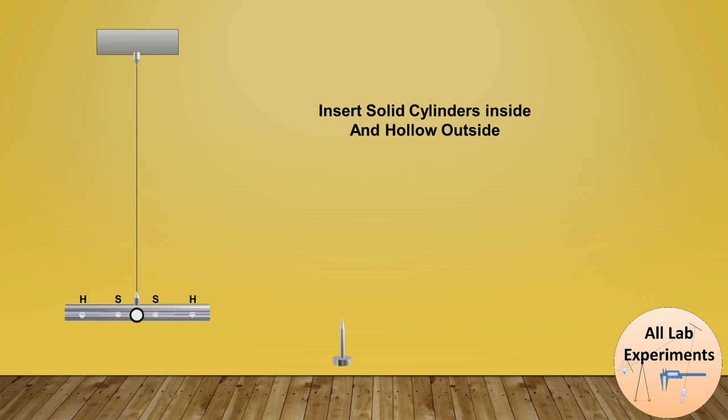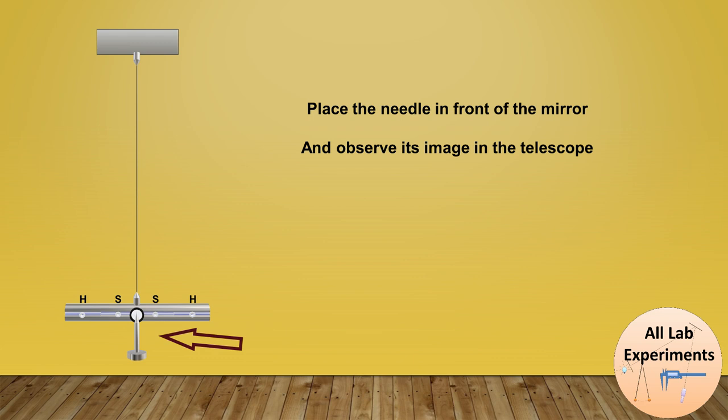After that, we will place this needle in front of the mirror and observe its image in the telescope. The size of this needle is big, so it is difficult to find when the needle is at its mean position. We use this method in which when the image and the object coincide, we consider this as the mean position of its oscillation.